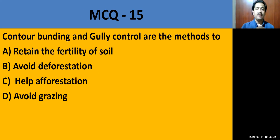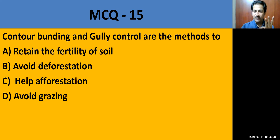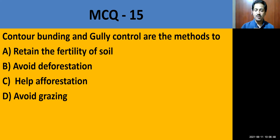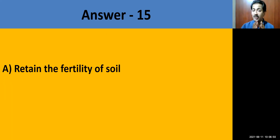MCQ question number 15: Contour bunding and gully control are methods to — retain the fertility of soil, avoid deforestation, help afforestation, or avoid grazing. The correct answer is retain the fertility of soil.